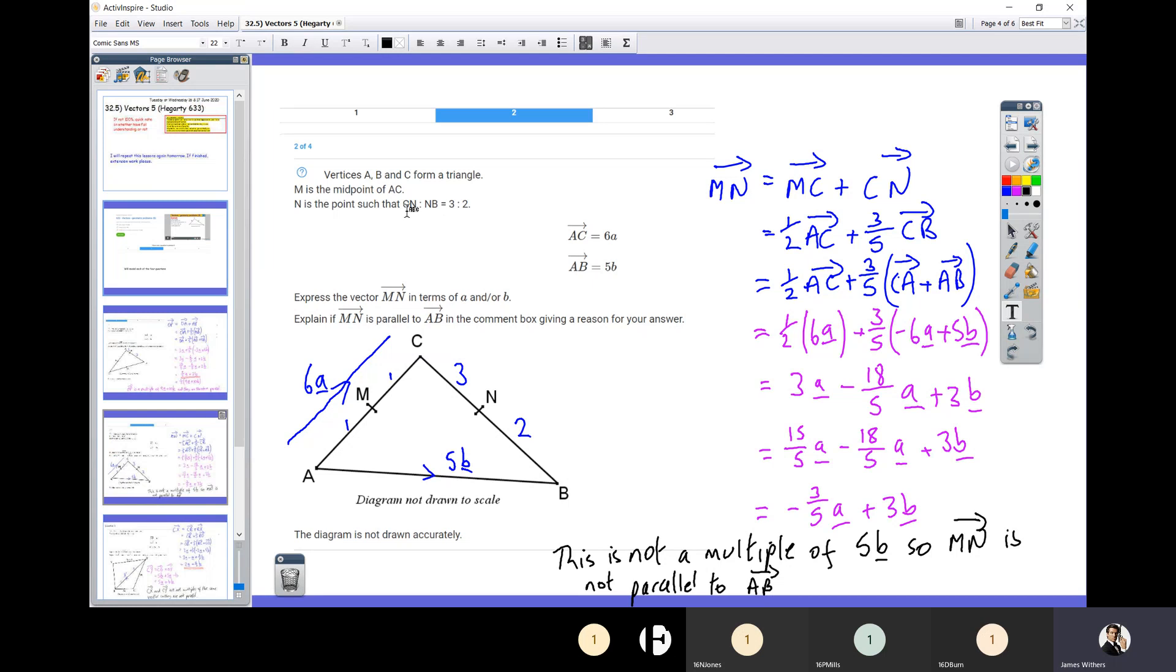So the usual process: read the question. CN to NB is 3 to 2. I'm told that AC is 6a, I'm told that AB is 5b, so that's labeling up the diagram from the question. And I'm just going to speed this up a bit because this is exactly the same process as question one. Exactly the same process. However, when I get down to the bottom, I can't factorize that to just get a multiple of b because there's some a's in it. So that is never going to be parallel to 5b or 4b or 6b because it's got some a's in the answer. So I can conclude that it's not a multiple of 5b, therefore it's not parallel to AB.